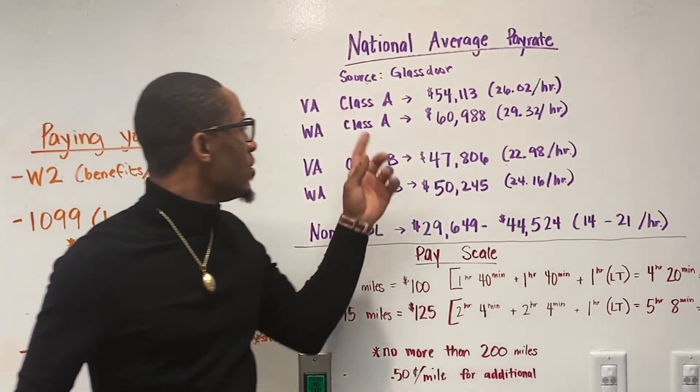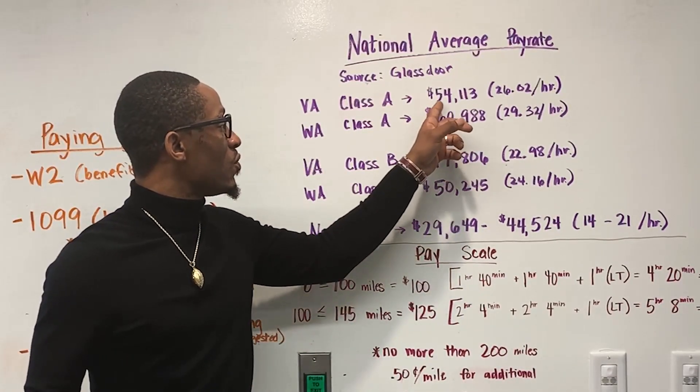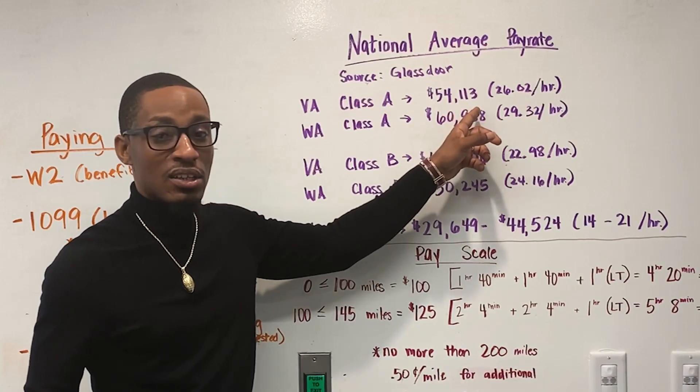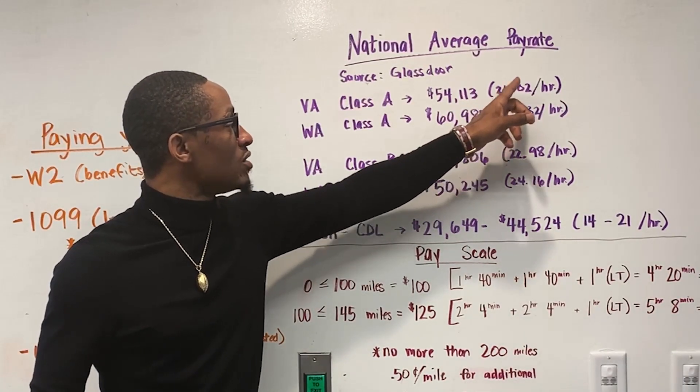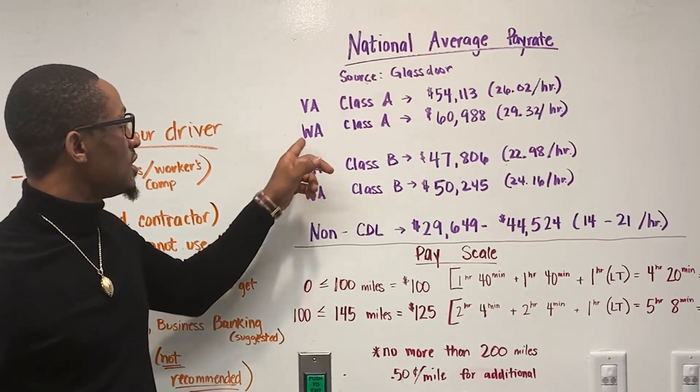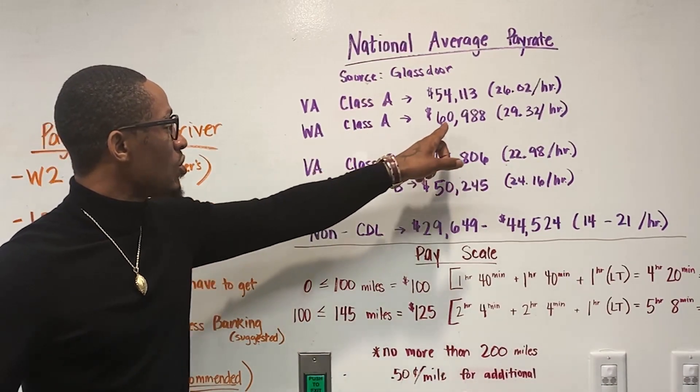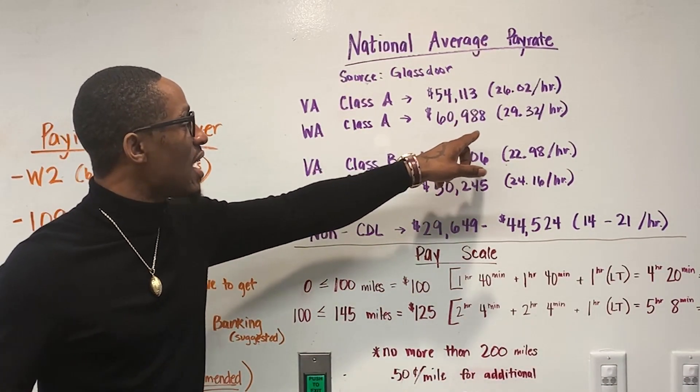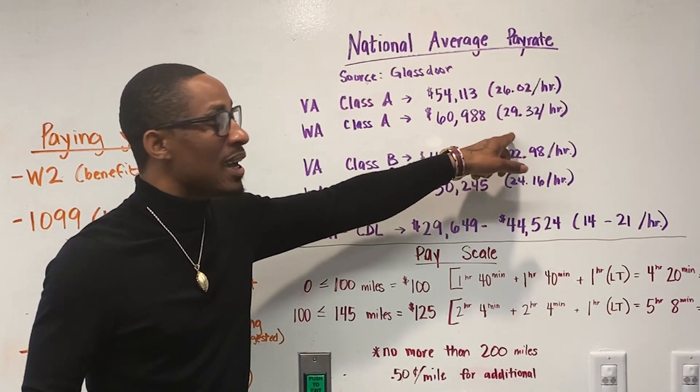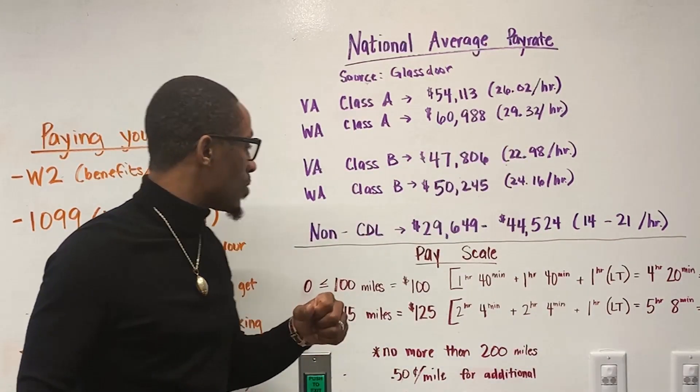For a class A, starting salary in Virginia is $54,113, which translates to $26.02 an hour. In Washington State, a class A starting out at $60,988, which translates to $29.32 an hour.